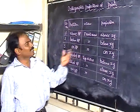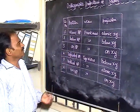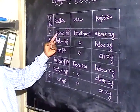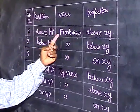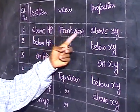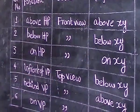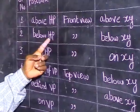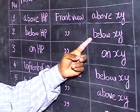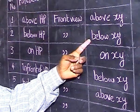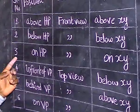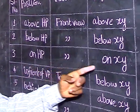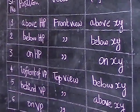Let's look at position and the corresponding projection. Take the first case: position is above HD, so it always relates to the front view. You should put the answer above the X-Y line. Take the second case: position is below HD, it relates to front view, so you should plot the point below the X-Y line. Here the position is on HD, relates to front view, and you should put the point on the X-Y line.